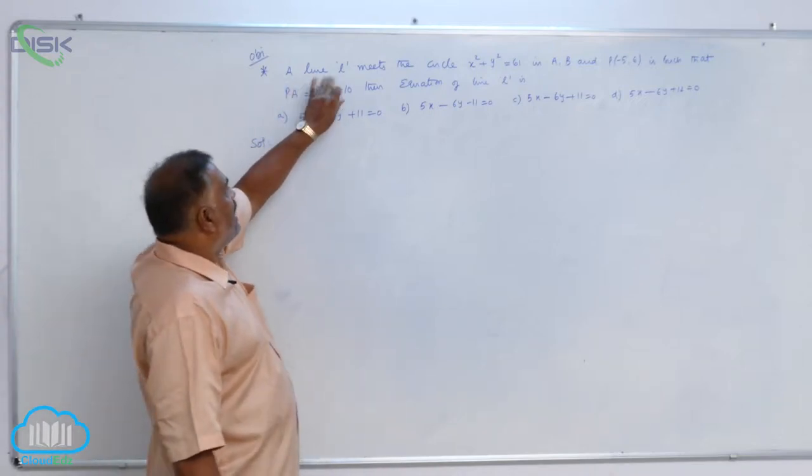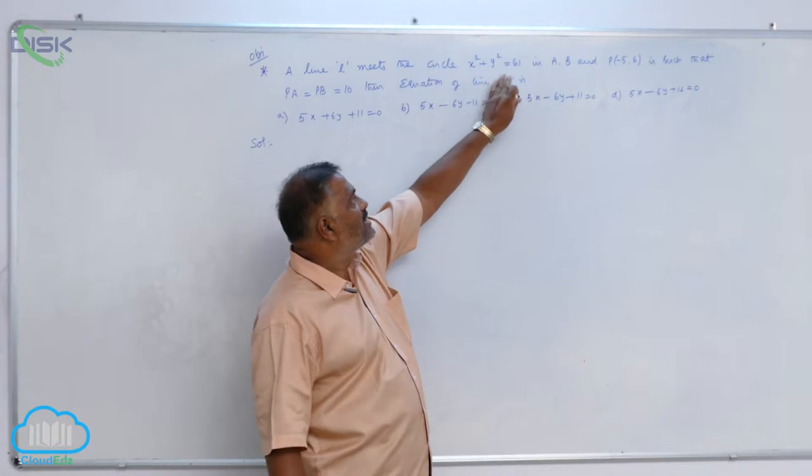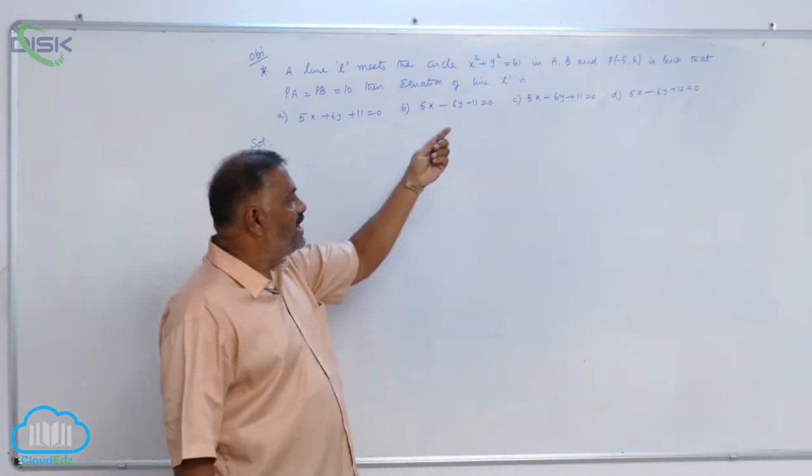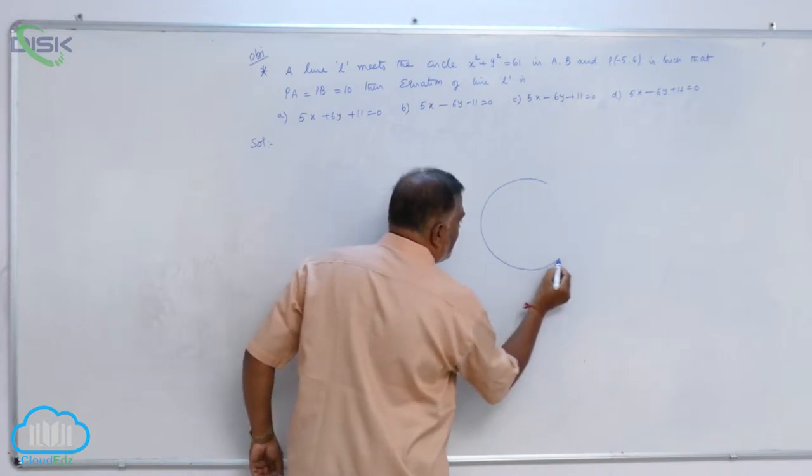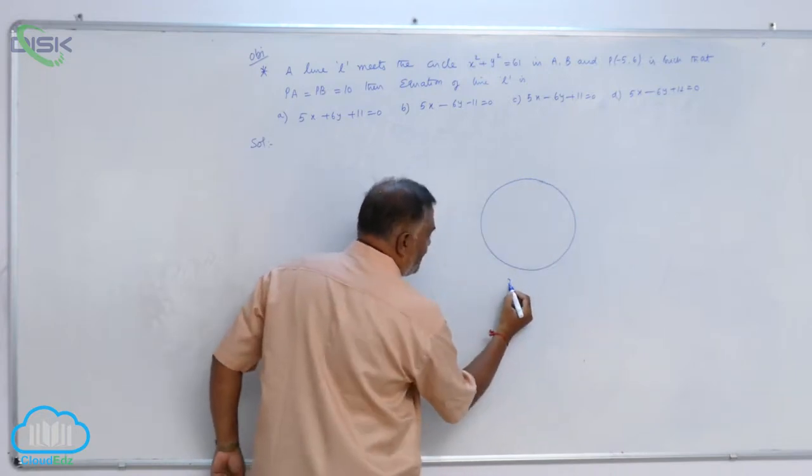One more problem in circles. A line L meets the circle x square plus y square equal to 61 in A and B. Let us draw the circle x square plus y square equal to 61, like this.